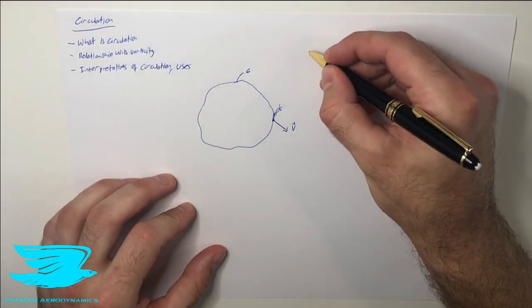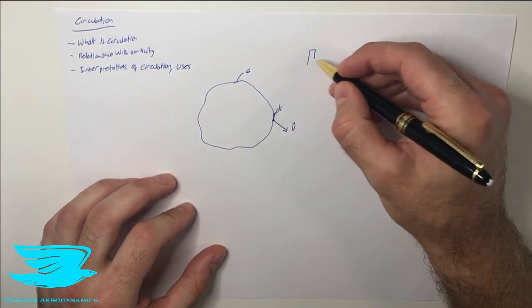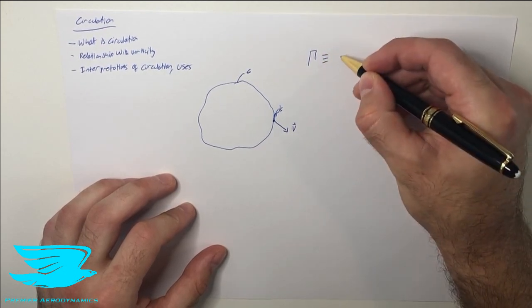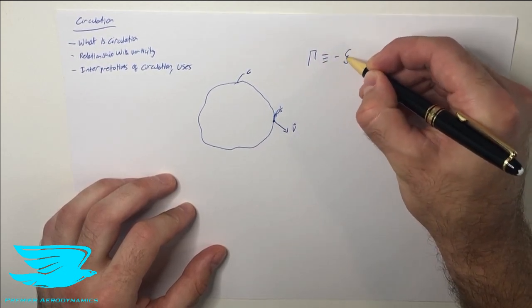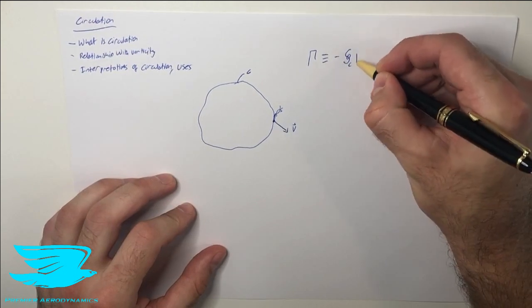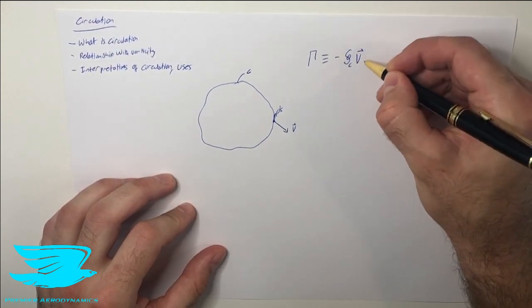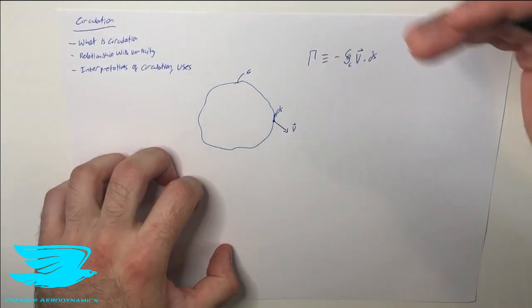So the circulation, which we denote usually by gamma, the Greek letter, is defined as the negative of the closed loop integral of the velocity vector times ds. So that little step.